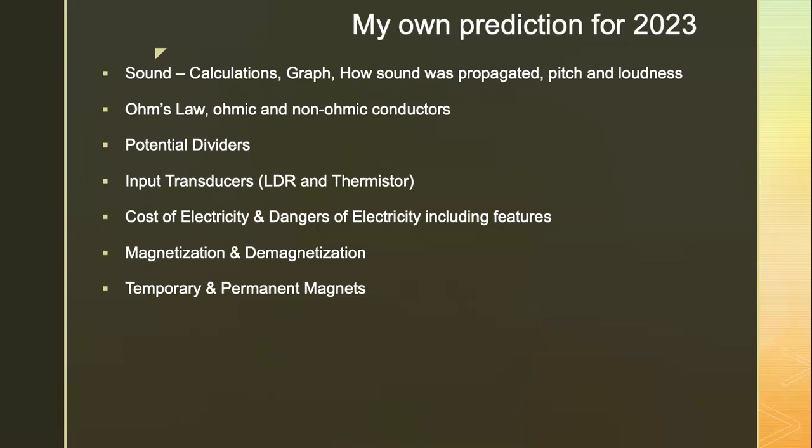Ohm's law, ohmic and non-ohmic conductors, potential dividers, maybe input transducers — LDR and thermistor — how they work, and how they affect overall resistance with increase in temperature or increase in light intensity. Also, cost of electricity and maybe dangers of electricity. This time around they may talk about the earth wire, which they have never tested, or just talk about a three-pin plug.